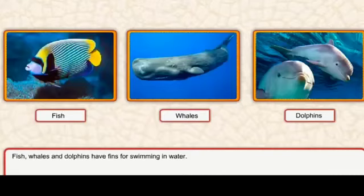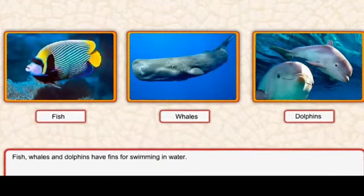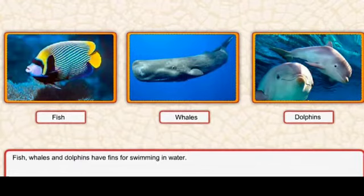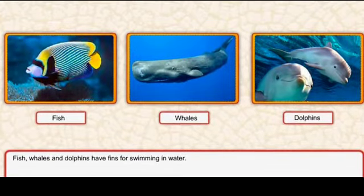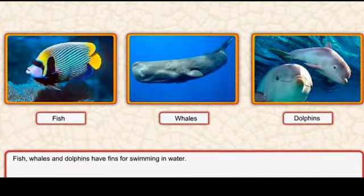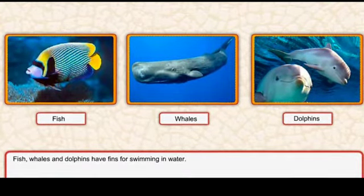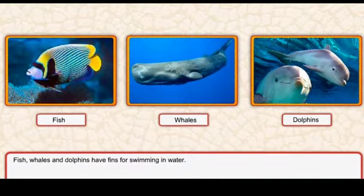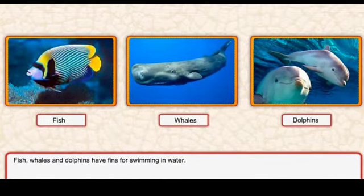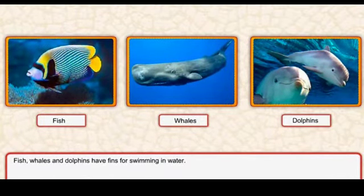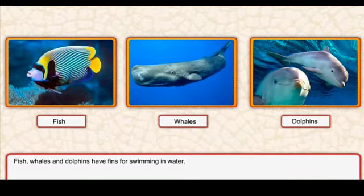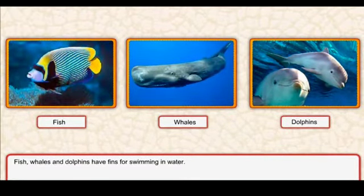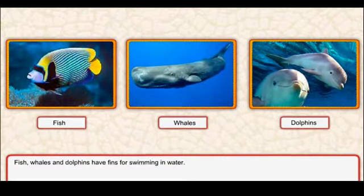Fish, whales and dolphins have fins for swimming in water. Fish, whale aur dolphin ke paas fins hote hain. Fins word ka matlab - aap inhe machhli ke baazu bhi keh sakte hain ya fins ka matlab par bhi hota hai. Yeh fins ko istemal karti hain paani mein swim karne ke liye.